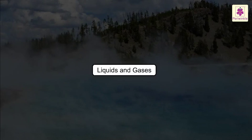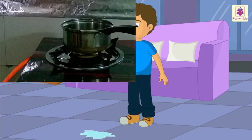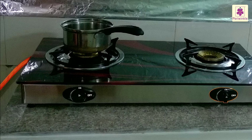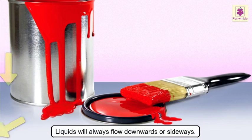Next, liquids and gases. Pour a cup of water on the floor — it will spread, but it will not cover the entire floor or room. But if the gas stove is not switched off properly, the gas from the pipe or cylinder will quickly spread all over the room. Liquids will always flow downwards or sideways.